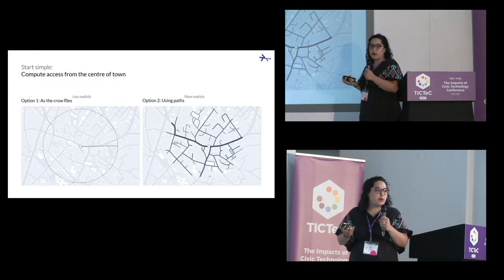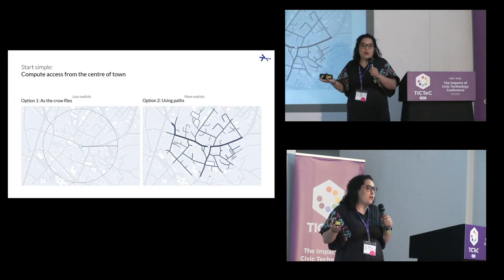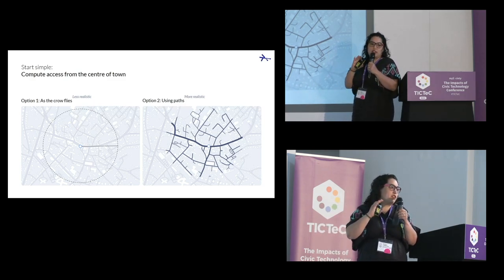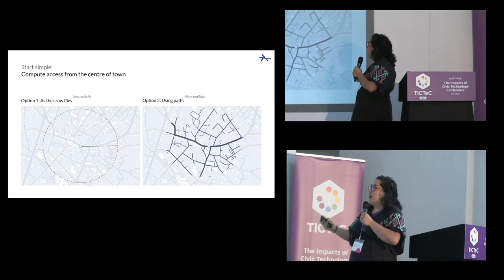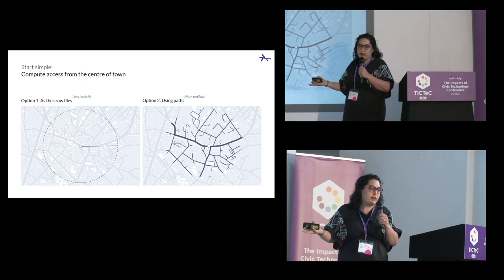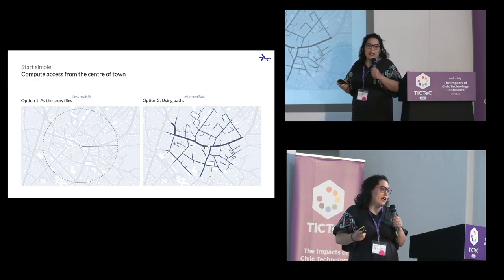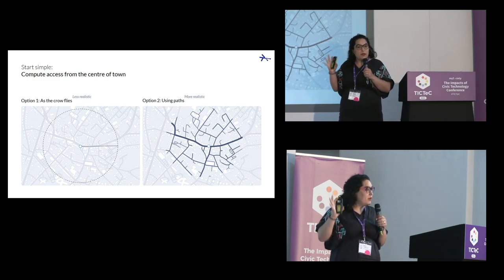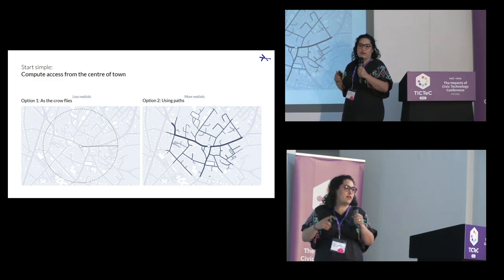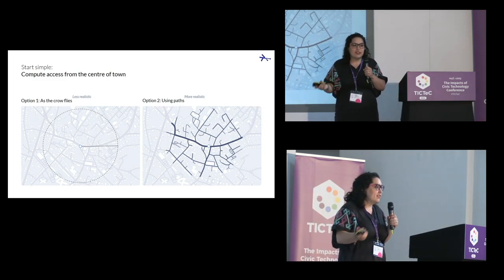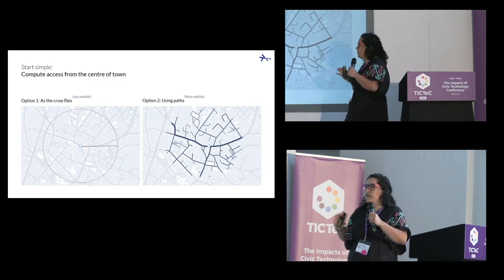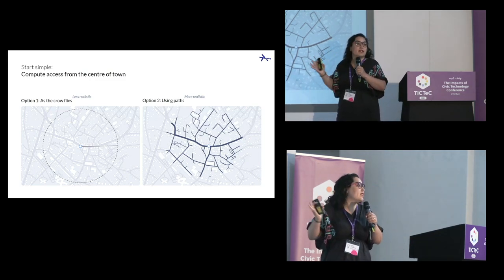Let me run you through the logic of how a local council would answer this question. The most generic approach is to take your town or neighborhood, plot a point at the center of it, then draw a radius. You would plot your supermarkets, and if the supermarkets are inside your radius — tick, we meet it. And if they're not, then we don't meet it.